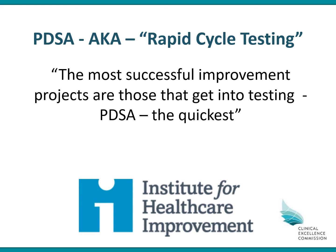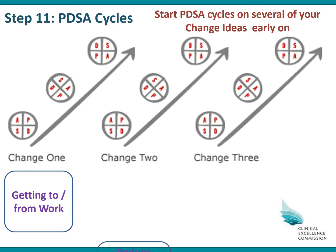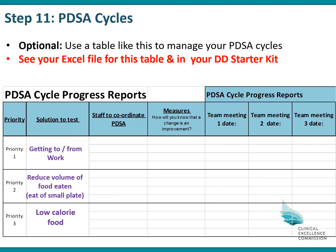Some advice from the IHI about PDSA is that most successful improvement projects are those that get into the testing of the PDSA the quickest. So get into this rapid cycle of testing as early as you can. You can start several PDSA cycles at the same time or stagger them. With David, for example, he could do several PDSAs simultaneously — how he gets to and from work as one change concept, reducing his volume of food eaten by eating on a side plate as another, and using a low calorie diet as a third. You can manage your information from PDSA cycles through a report available in the Driver Diagram Starter Kit — prioritising PDSAs, allocating them to staff, working out measures, and reporting from meeting to meeting.